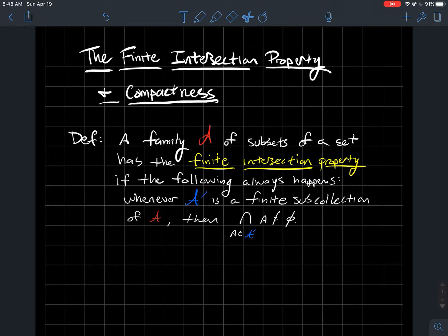This is a video about the finite intersection property and how it relates to compactness. A family of subsets of a given set has the finite intersection property if the following always happens: whenever you take a finite subcollection, then the intersection of all things in that subcollection has to be non-empty.